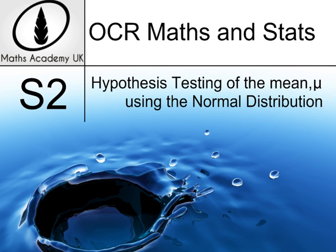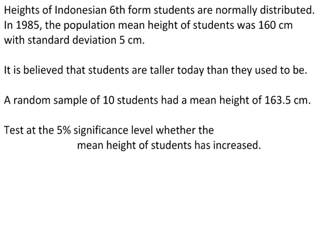Hypothesis testing of the population mean of a continuous variable using the normal distribution. Heights of sixth form students are normally distributed with a population mean of 160 cm and standard deviation of 5 cm.